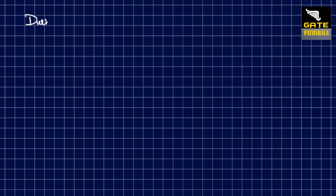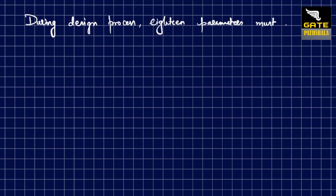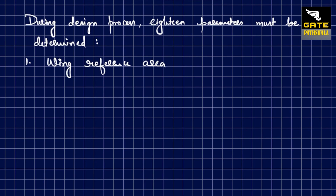During the design process, 18 parameters must be determined. The very first one is the wing reference area. Aeronautical and aerospace engineers very often use the term planform area, which is denoted by S.